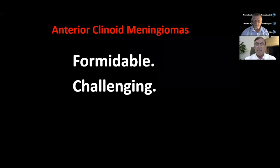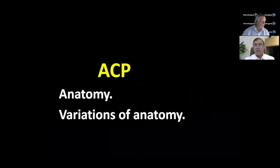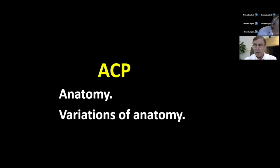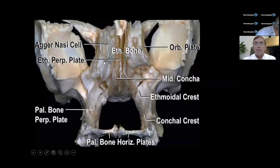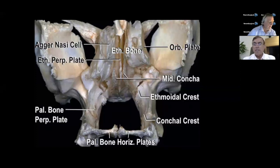No doubt that the anterior clinoid meningiomas in that area are formidable and very challenging lesions. Let's talk about the anterior clinoid process. We don't only need to know the anatomy of the anterior clinoid process, but the variations of anatomy in that area, and that applies to anywhere you would operate upon. The sphenoid bone body, the medial and lateral pterygoid plates, the greater wing, and the lesser wing.